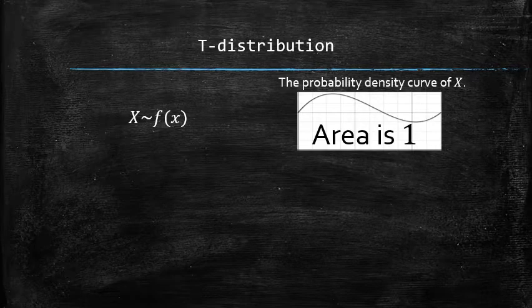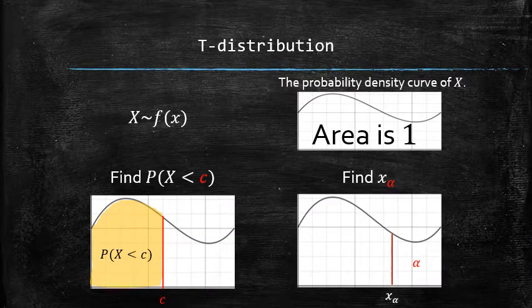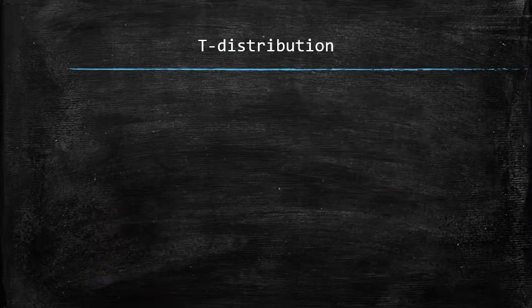First we will discuss the parameters and the properties of its probability density curve. Then we will discuss how to compute the probabilities and find the x sub alphas. Let's get started.